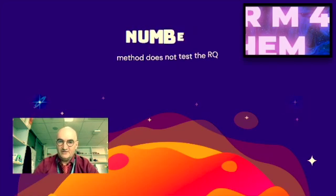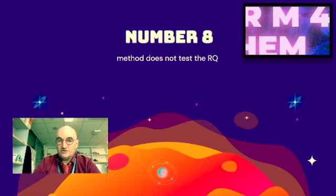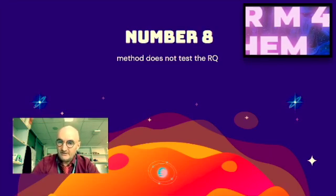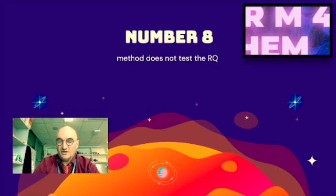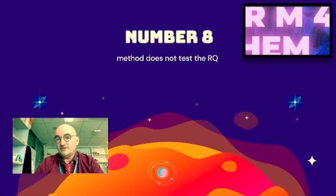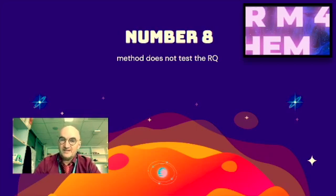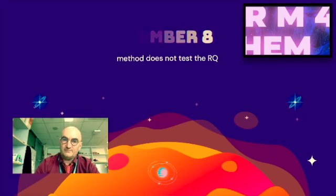Coming in at number eight, maybe the method does not test the research question. This comes back to, have you controlled all of the variables that a reasonable chemist could expect could affect your experiment? If you've missed some or if you've not controlled some, that will be an issue. Your moderator, your examiner will pick this up.